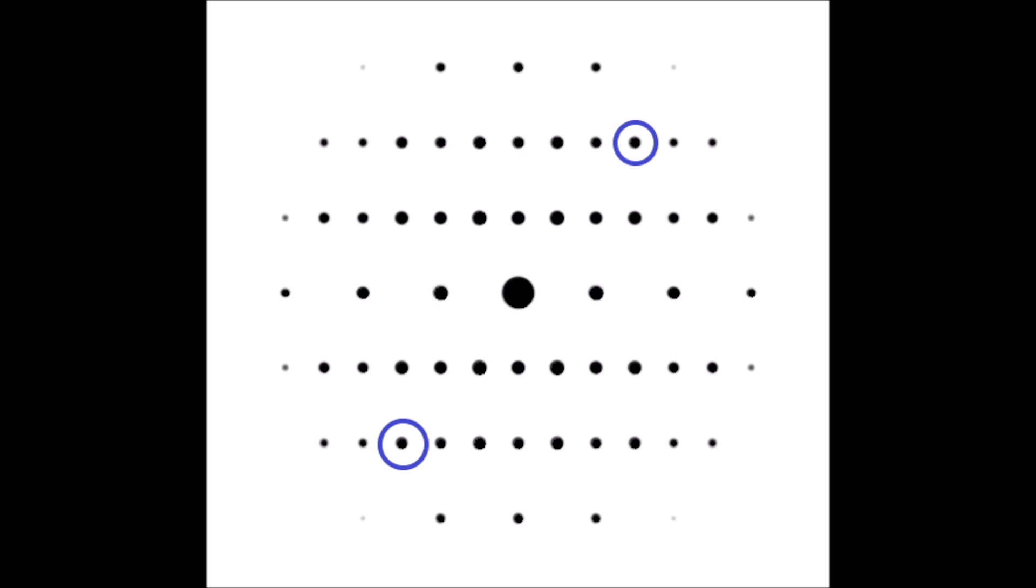So the question then becomes, what does the diffraction pattern look like if I'm not aligned with the zone axis? Instead of seeing this symmetry in the intensities of opposing spots, I no longer see that across the whole diffraction pattern.